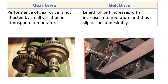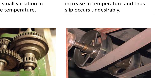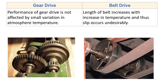Performance of gear drive is not affected by small variations in atmospheric temperature — there is no change in gear dimensions and it does not affect system performance. In belt drive, the length of the belt increases with increase in temperature, causing undesirable slip. Since belts are made of leather or rubber, increased temperature increases belt length, slip occurs, and efficiency decreases. Frequent adjustment of initial tension is required, and changes in atmospheric conditions can affect the performance of the belt drive system.